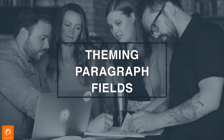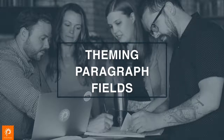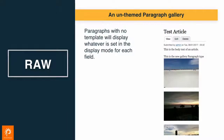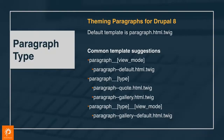Now that we've attached our paragraph to the content type, we need to make it look like that image a few slides back. By default it will look like plain Drupal - just all the images, the title, not very pretty. Just like anything, you can theme at the global level for all paragraph types, or you can drill down by type.